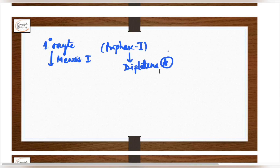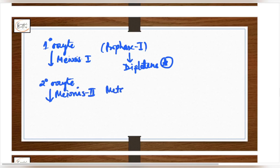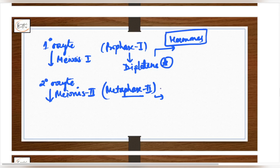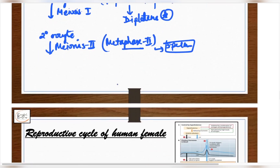The second arrest is the secondary oocyte arrested at metaphase 2 of meiosis 2. To exit the first arrest you need hormones — puberty hormonal changes trigger completion of meiosis 1. To exit the second arrest you need the entry of sperm. And eventually you have the ovum. So to summarize, these are the two arrests in the reproductive cycle.